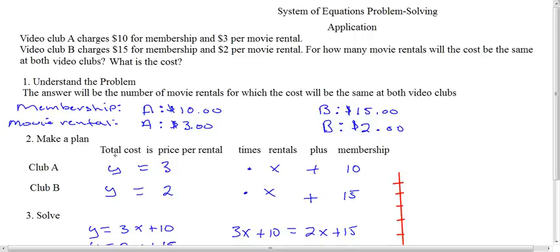So our total cost is Y. That's what we're looking for. So here for Club A, Y is equal to price per rental. How much they're charging per rental for A? $3. There it is. The word times is a dot. That means multiplication. And rental, we don't know, so we're using the variable X. This is not time, this is the variable X. Plus, and the membership, how much they're charging per membership. And of course, it's $10.